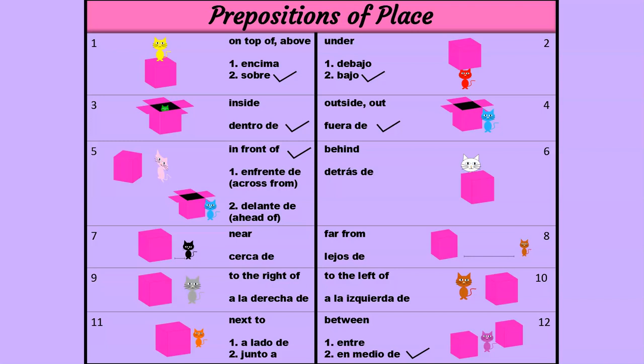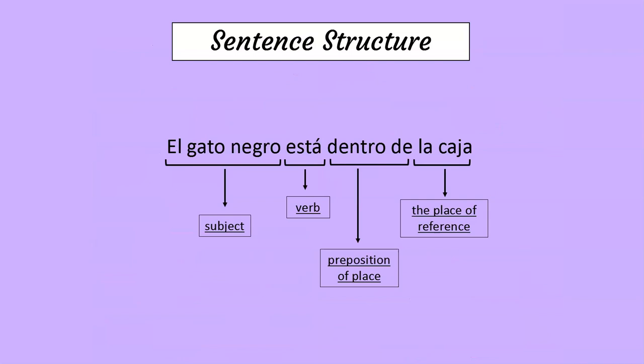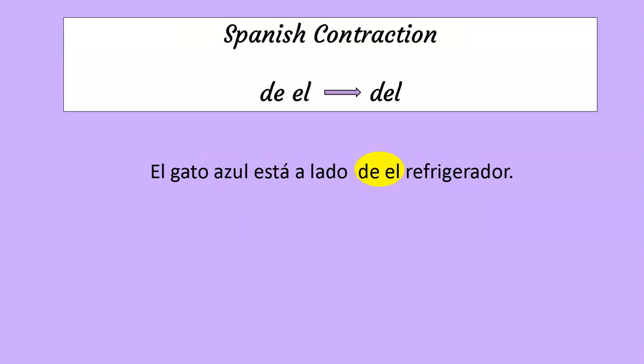like in a line. Now let's look at how we can put together sentences. This is the sentence structure: We start with the subject, then continue with the verb, add the preposition of place, and then the place of reference. The sentence structure is very similar to English. Now let's talk about Spanish contractions.